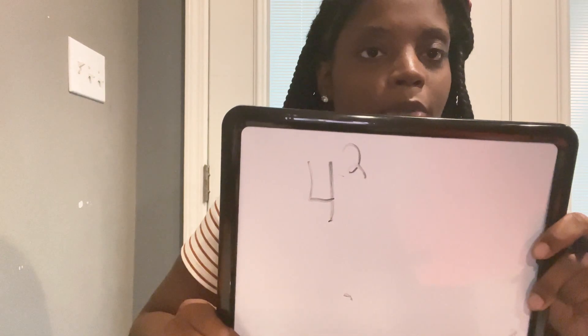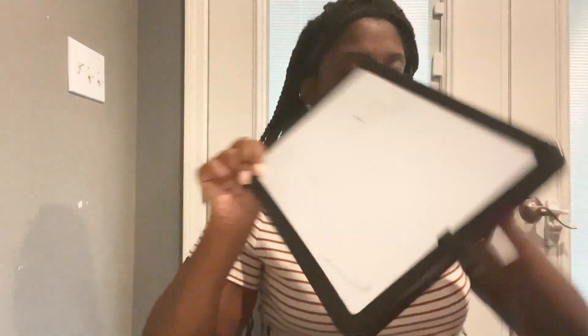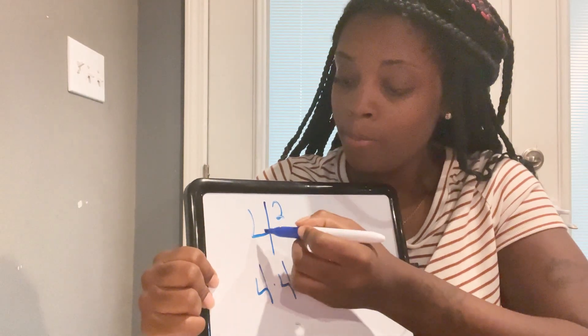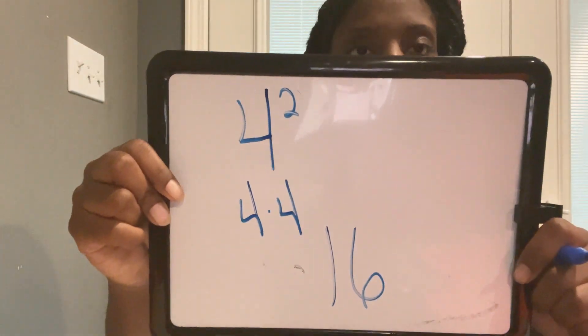Four to the second power. Most people will look at it and say that's eight — do not make that mistake. Write it out: the base is four, the exponent is two. Four times four equals 16. The answer is 16.